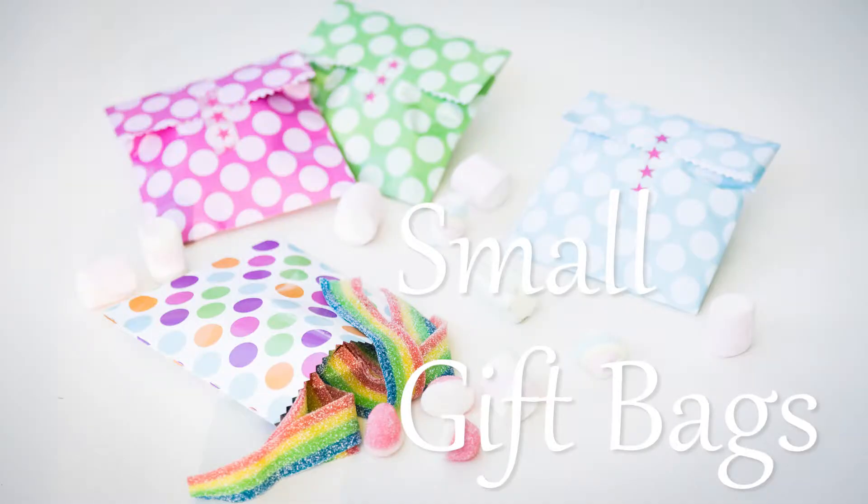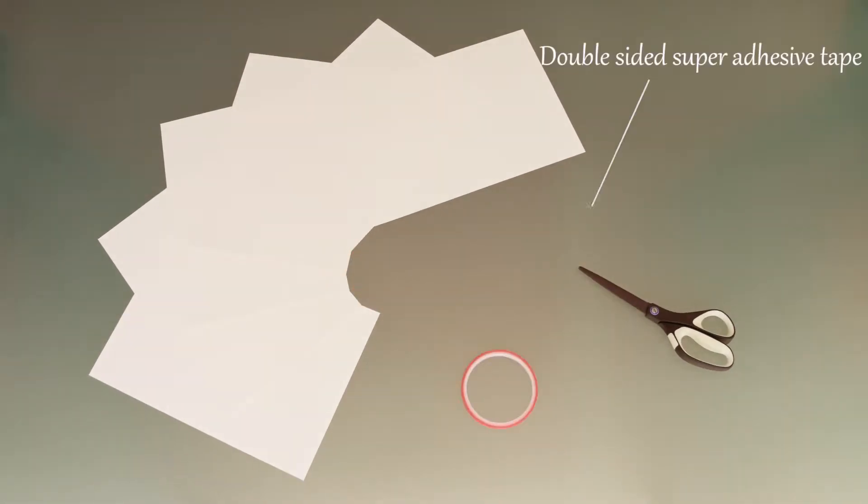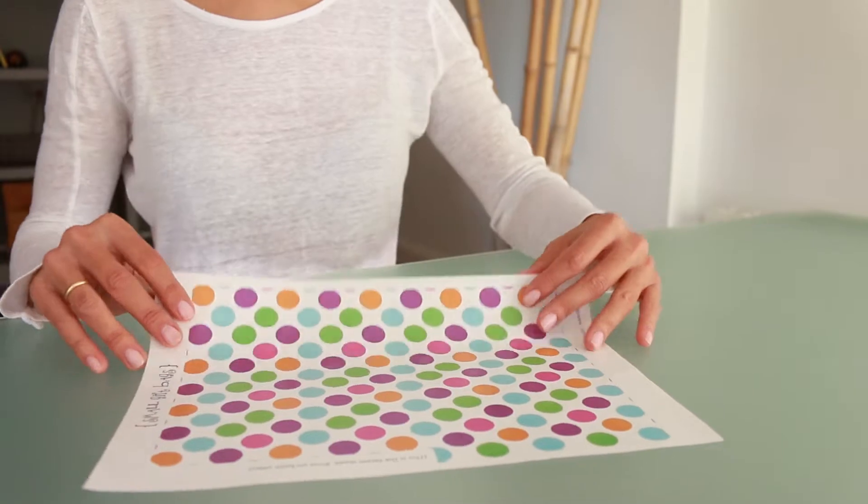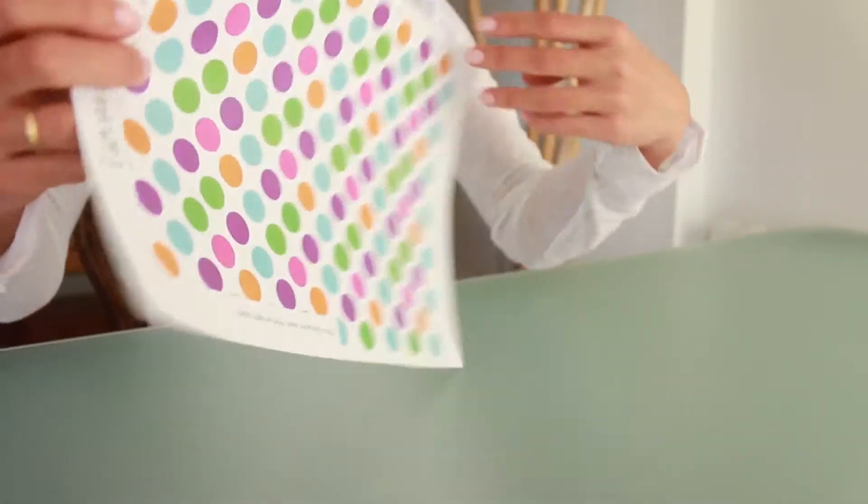Today we're going to make these party essential small gift bags. Materials: six pieces of A4 glossy paper, scissors, and double-sided super adhesive tape. First, choose paper bags with a design that fits the decor of your party and print them.